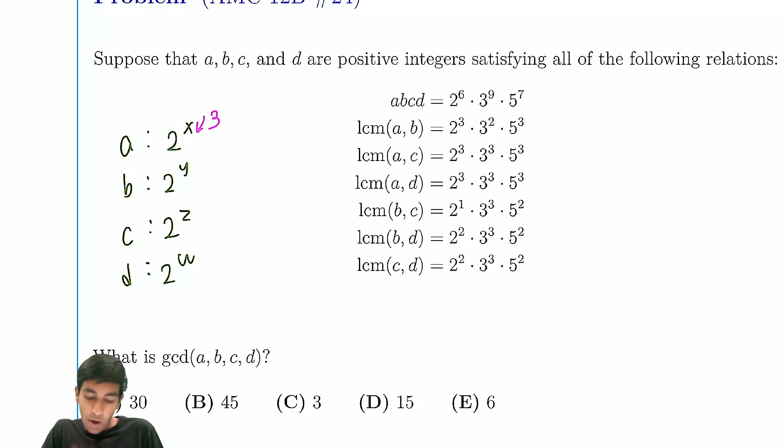Now, why is that the case? What if y is 3, z is 3, and w is 3? Because if, let's say, x was not 3, then in order for this LCM to be 2 cubed, this must have a factor of 3, this must have a factor of 3, and this must have a factor of 3. But then GCD of B and C would then also have a factor of 3, but it doesn't. So therefore, that's why this must be 3, or must be exactly 3.